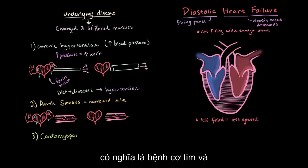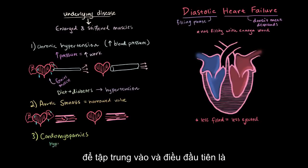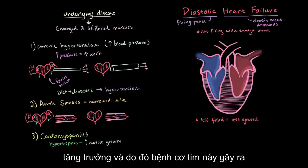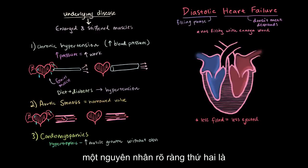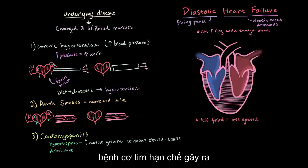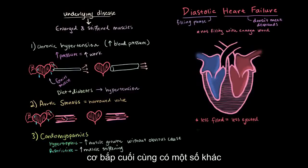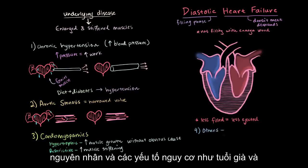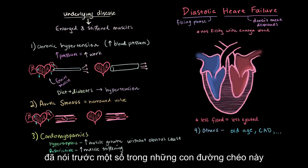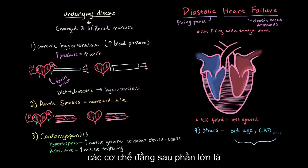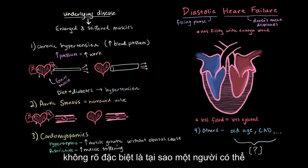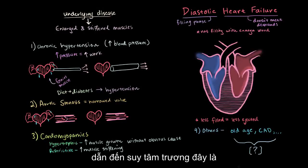Next up are cardiomyopathies — heart muscle diseases. For diastolic heart failure in particular, there are two to focus on. The first is hypertrophic cardiomyopathy, which causes muscle growth, often without an obvious cause. The second is restrictive cardiomyopathy, which causes stiffer and more rigid muscles and restricts the ventricles from expanding. These two cardiomyopathies hit the nail on the head for diastolic heart failure — you have either stiffer muscles or enlarged muscles. Other causes and risk factors include old age and coronary artery disease, though some of these cross paths with systolic failure, and many mechanisms remain largely unknown.